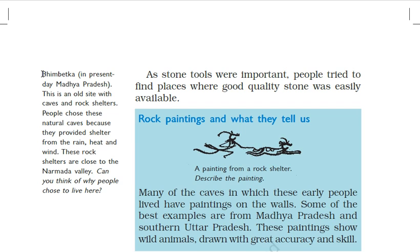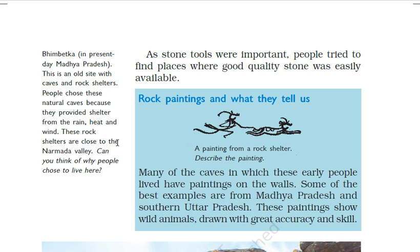Bhimbetka, in present-day Madhya Pradesh, is an old site with caves and rock shelters. People chose these natural caves because they provided shelter from rain, heat, and wind. These rock shelters are close to the Narmada Valley.